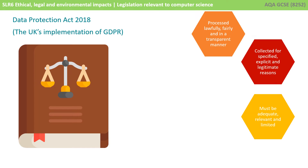The next principle is data minimisation. This means only holding as much data about a person as is necessary. Data must be adequate, relevant, and limited to what is necessary in relation to the purposes for which they are being processed. For example, if you are collecting data to post a catalogue, you only need the person's name and address — you do not need their date of birth or gender. It's not relevant.